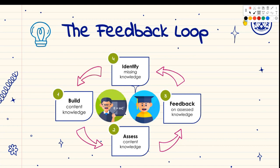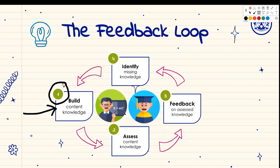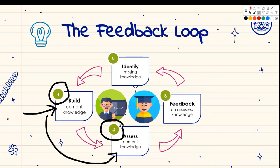The feedback loop starts with teaching — building content knowledge. First and foremost, we talk to our learners, discuss certain things with them, and try to construct new knowledge. Then, in order for us to know whether or not they've actually learned it, we assess the content knowledge. This is done in many different ways — formal assessments, tests, projects, and all sorts of things.